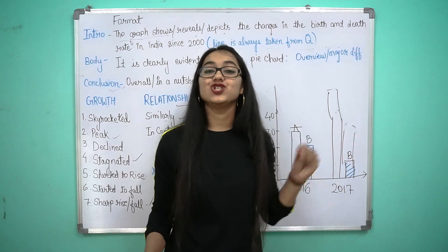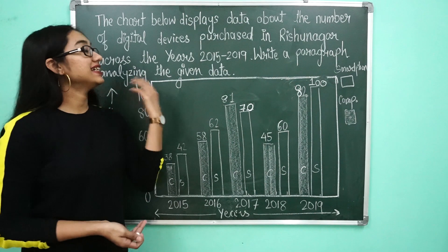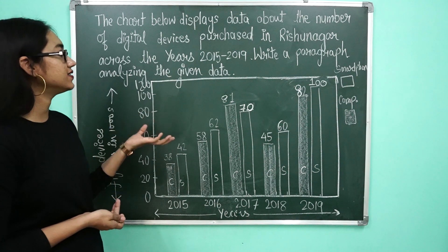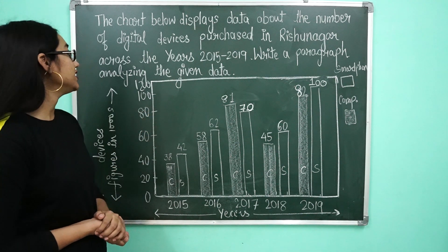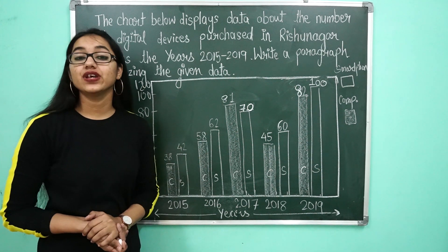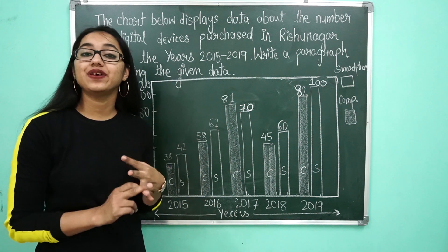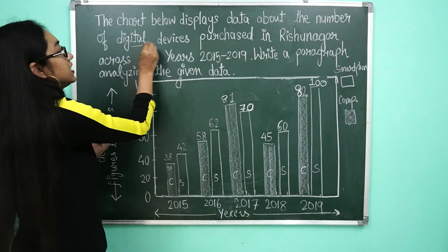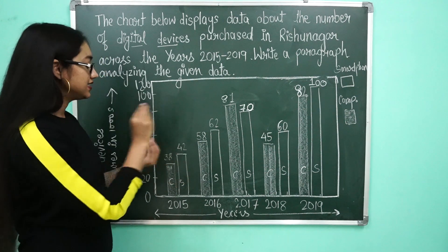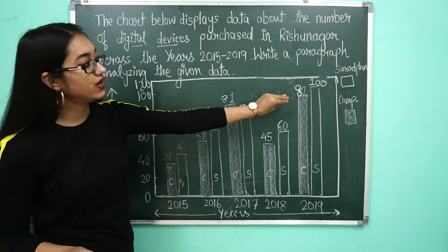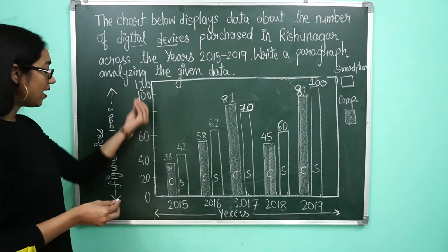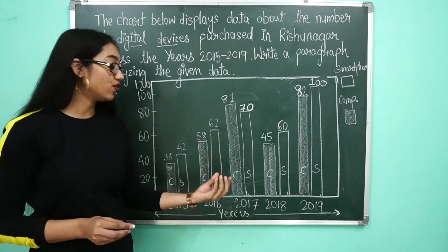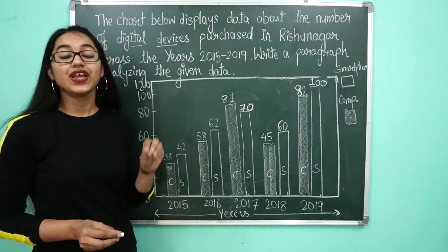अब हम एक example के through इन सारी चीज़ों को समझेंगे। हमारा example है: 'The chart below displays data about the number of digital devices purchased in Rishunagar across the years 2015 to 2019. Write a paragraph analyzing the given data.' सबसे पहले यह देखना है कि यह graph है, table है, या pie chart है — हमने देख लिया कि यह graph दिया है। Question पढ़के पता चला कि यहाँ digital devices की बात है — smartphone और computer — और figures in sales दिये हैं।